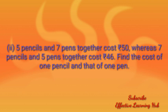Second question: 5 pencils and 7 pens together cost Rs. 50, whereas 7 pencils and 5 pens together cost Rs. 46. Find the cost of 1 pencil and that of 1 pen. Let the pencil be x and the pen be y. So 5 pencils mean 5x and 7 pens mean 7y: 5x plus 7y equal to 50. And 7 pencils and 5 pens: 7x plus 5y equal to 46. Find x and y.